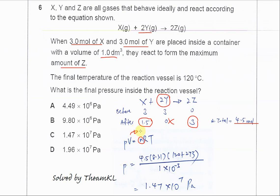It's given as 1 dm³, so we convert to meter cubed by multiplying by 10^-3. Substitute n = 4.5, R = 8.31, and make sure temperature is in Kelvin: 120°C + 273. The answer is C.